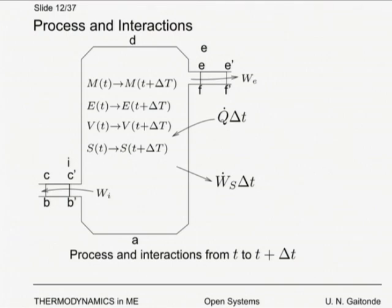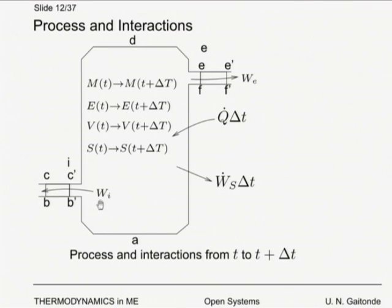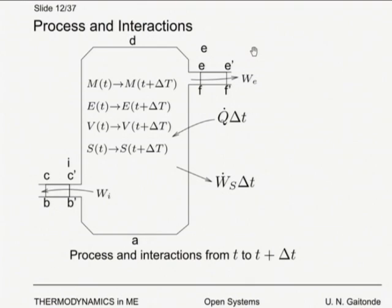The state of the system changes from M(t), E(t) to M(t+Δt), E(t+Δt). During that period, heat transfer to the system is Q̇·Δt, and work done by the system except for pumping is Ẇ_s·Δt. Work required for the exit plug leaving is W_e, and work required for the inlet plug entering is W_i.